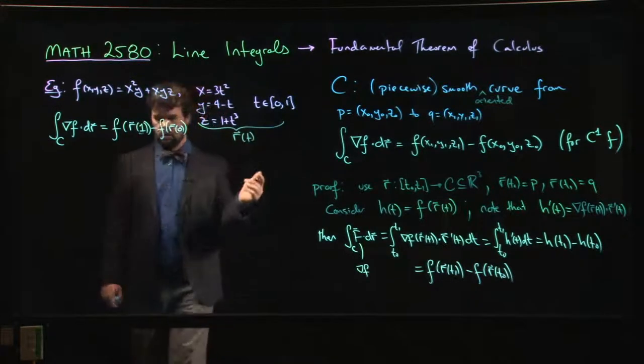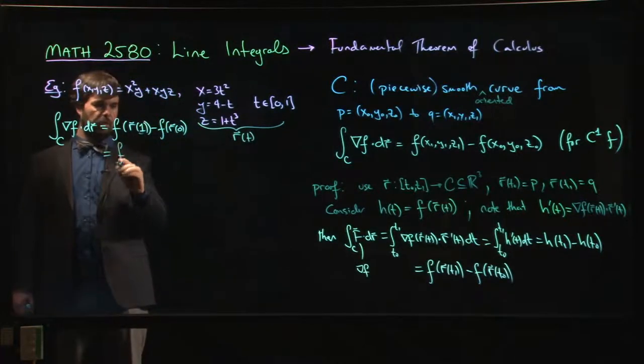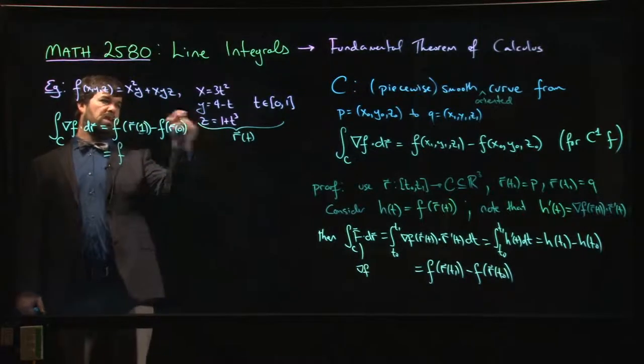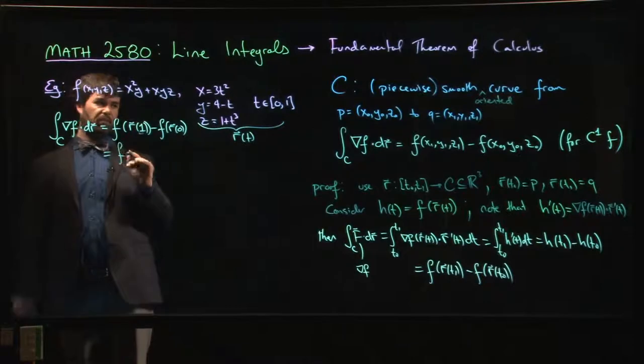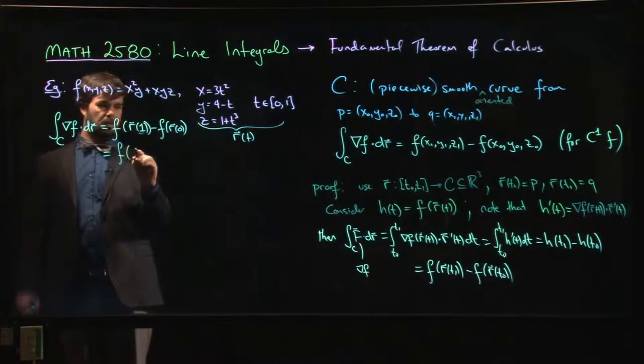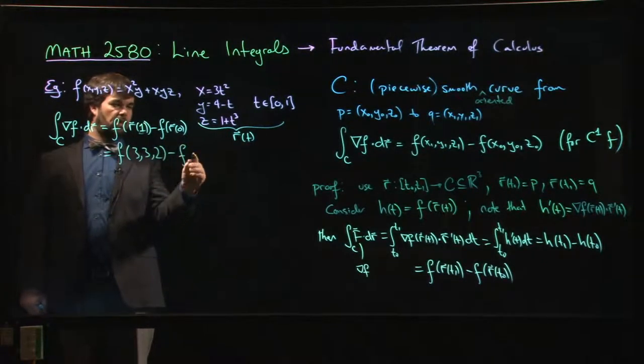Okay, so that's actually really easy. All right, all we have to do is plug in. Let's see, so first we plug in t and then we have to plug things into f. So first of all, when t is equal to 1 we get 3, 3, and 2.